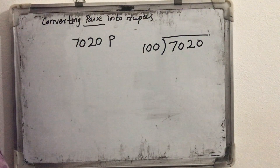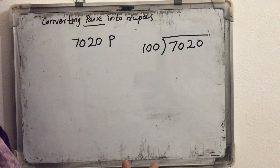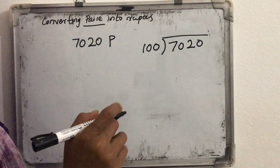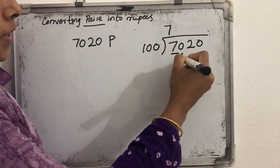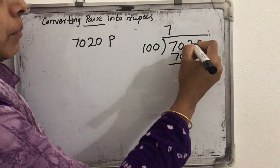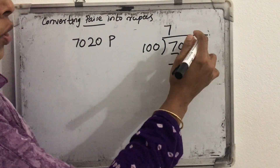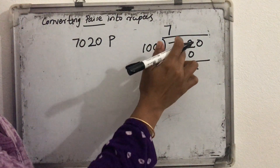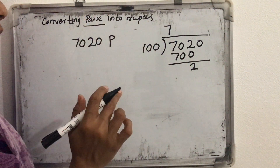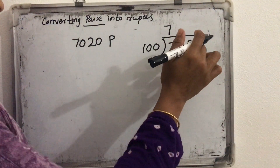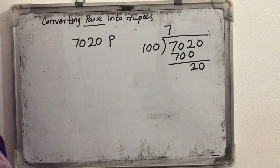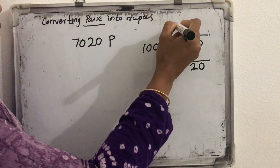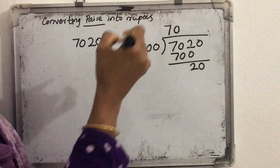702 divided by 100 — in 702 how many hundreds are there? 700 are there. So 7 into 100 is 700. Then by subtracting, 702 minus 700 we will get 2. Then 7 minus 7 is also 0. Now bring down the next digit 0. Now we have 20. 20 by 100 — so that is 0, so we can put 0 here.